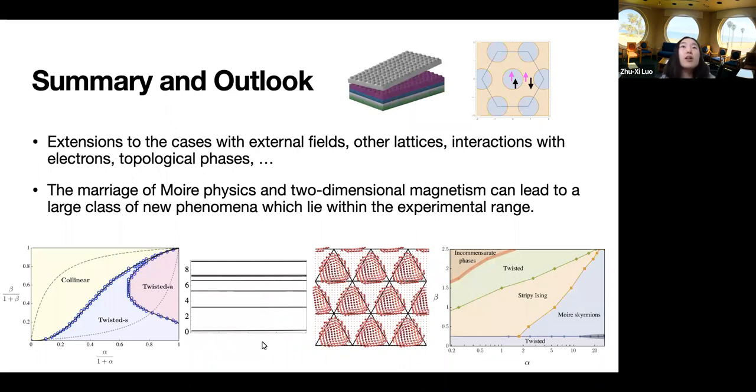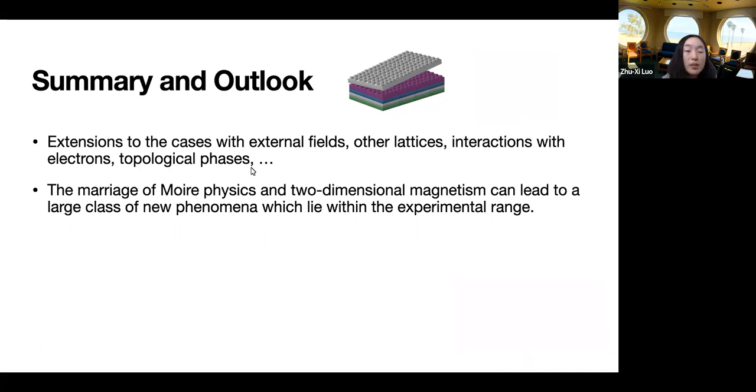Now let me summarize. So there are a lot of promising future directions, including, for example, adding external fields. So adding fields in homo bilayers of ferromagnets or AFMs effectively corresponds to decreasing beta. So one can expect to be more easily able to get to the twisted phases when a field is present. And one can also consider other lattices, interaction with electrons and more ambitiously heterostructures of even topological phases. So in summary, the take-home message is there are a lot of exciting stuff waiting to be discovered in moiré magnetism. And with this, I'll conclude and thank you. It seems that we can finish everything before 2:45 PM.